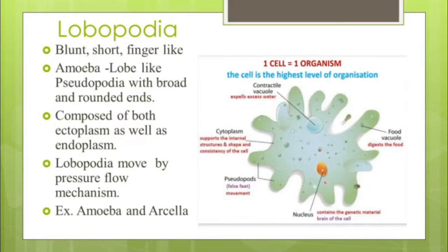Lobopodia is a blunt and short finger-like projection. It is a lobe-like pseudopodium with a broad and round end, composed of both ectoplasm and endoplasm. Lobopodia move by a pressure-flow mechanism. You can observe this type of lobopodia in Amoeba and Entamoeba.